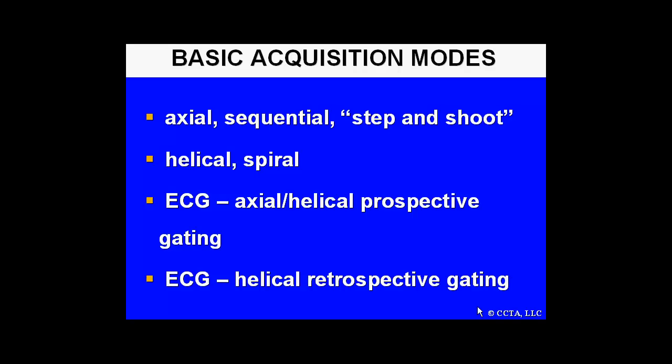There are several basic acquisition modes for imaging using CT: axial, sequential, or step-and-shoot; helical and spiral; and then specifically for cardiac imaging, ECG axial or helical prospective gating, and ECG helical retrospective gating.